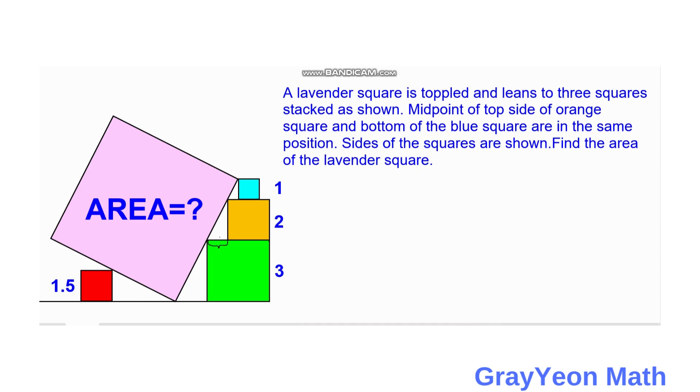It should be equal to 3 minus 2 and that is 1. And this side of this orange square would be 2 also.